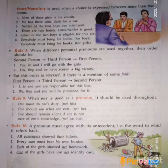Rule 10: A pronoun must agree with its antecedent — that is, the word to which it refers back. Examples: 'All passengers showed their tickets.' 'Every man must bear his own burden.' 'Each of these girls showed her homework.'